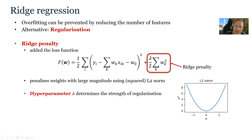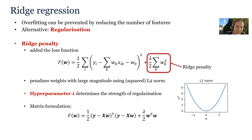The penalty is multiplied by a value lambda. This is a hyperparameter of the penalized regression and it determines the strength of regularization. We can write the ridge regression loss in matrix formulation as well, and we can see that the ridge penalty becomes vector w transpose times vector w.